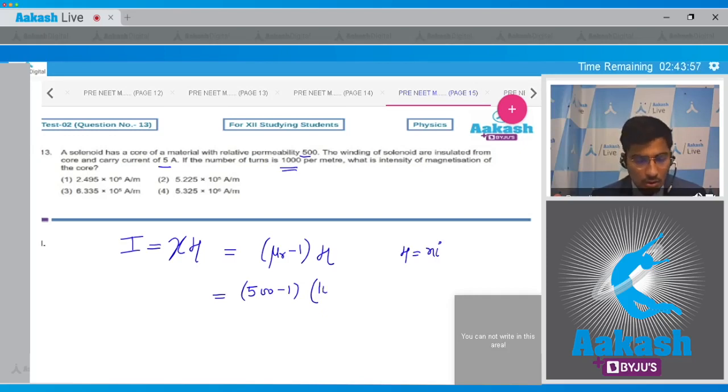Now this will be equal to 500 minus 1, and H students can be written to be equal to NI. So this will be equal to 1000, that is the number of turns per unit length, into 5, that is the current. And this will be equal to 2.495 into 10 raised to power 6 amperes per meter. And hence for this question the correct answer is option number 1.